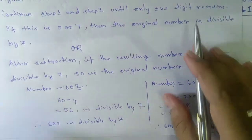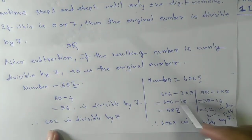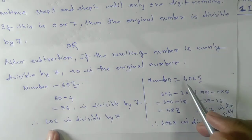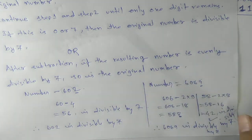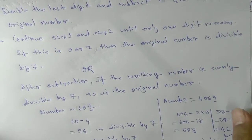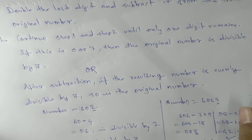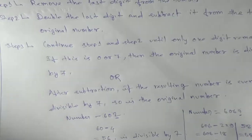Now if we take a bigger number — like a 7-digit or 8-digit number — it will be difficult to continue this method step by step. So we have one more way to complete the divisibility rule check. This second method is also in your syllabus.